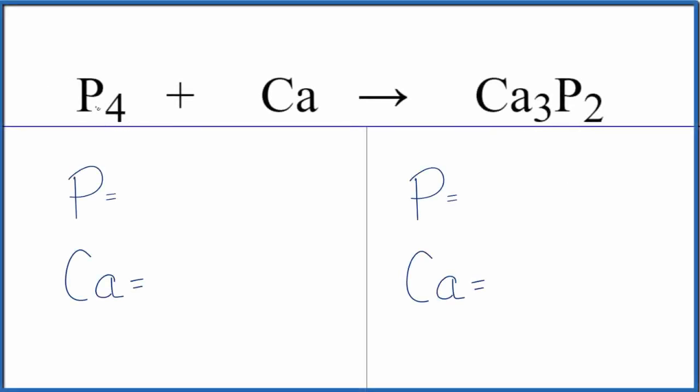In this video we'll balance the equation P4 plus Ca gives us Ca3P2. This is tetraphosphorus. We have calcium metal and we get calcium phosphide. So let's count the atoms up and balance the equation.